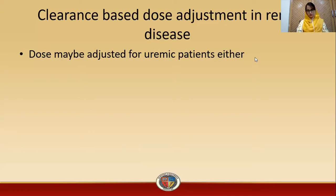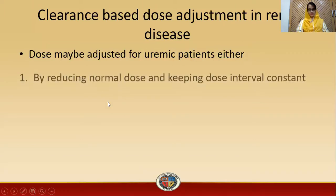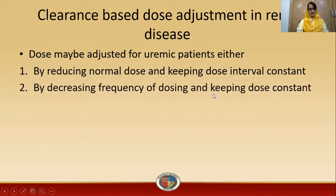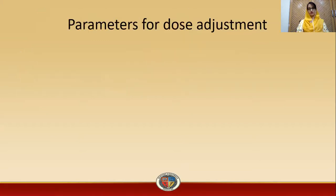Dose may be adjusted for uremic patients in two ways: first, by reducing the normal dose while keeping the dose interval constant; or second, by decreasing the frequency of dosing while keeping the dose constant.